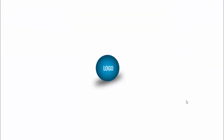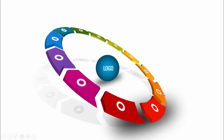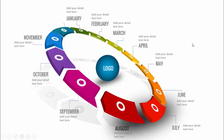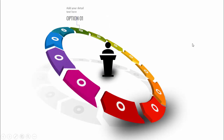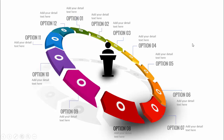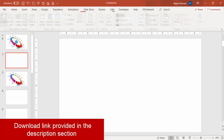In today's tutorial I am going to show you an exciting slide for school students, teachers, and working professionals. When you click, 12 options appear with different colors, and clicking each gives you the detailed text. I've put all 12 months as an example, and also created a version with option one, option two, etc. Let's see how to do this in PowerPoint.